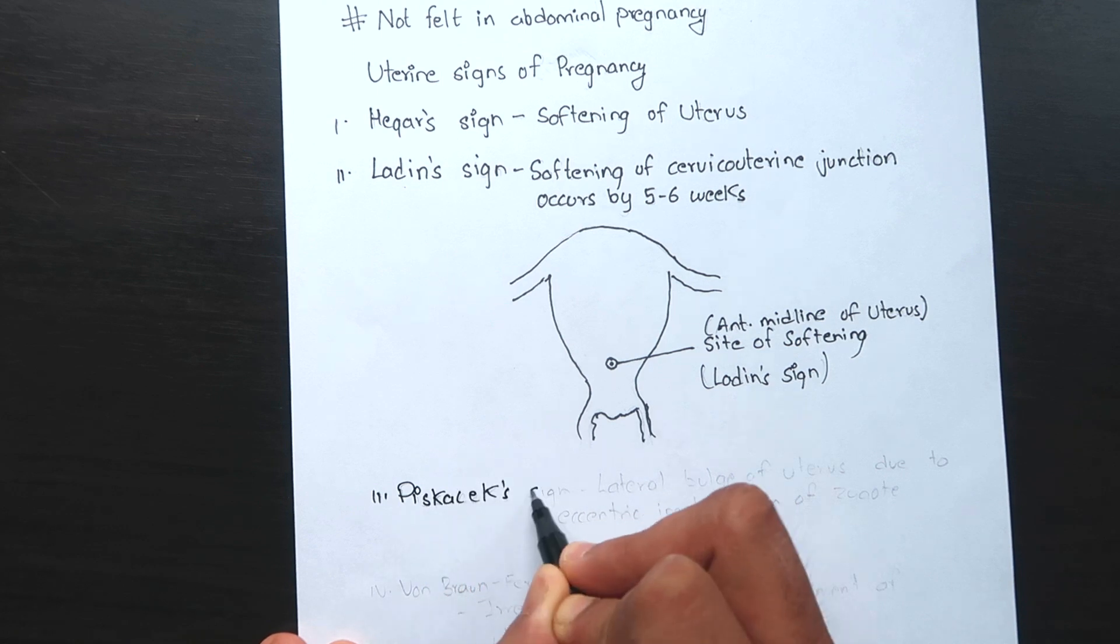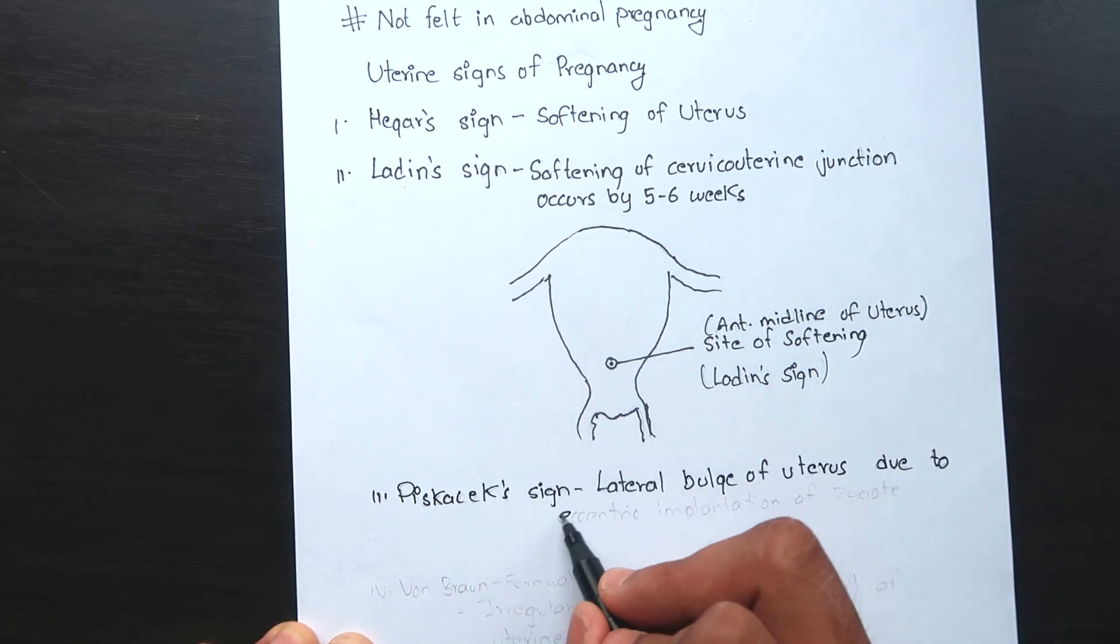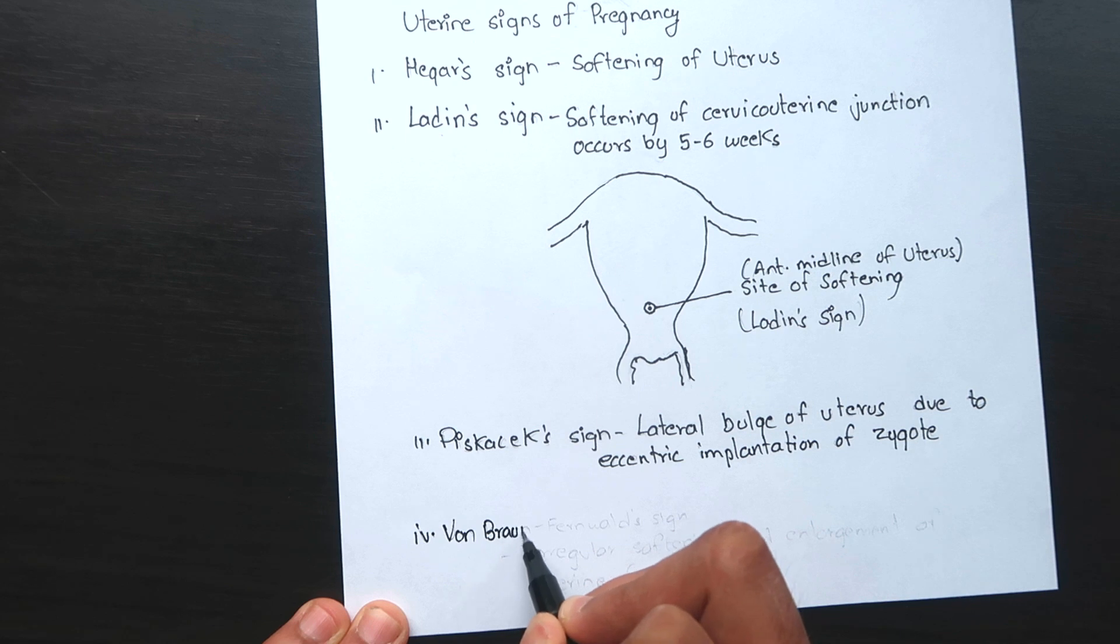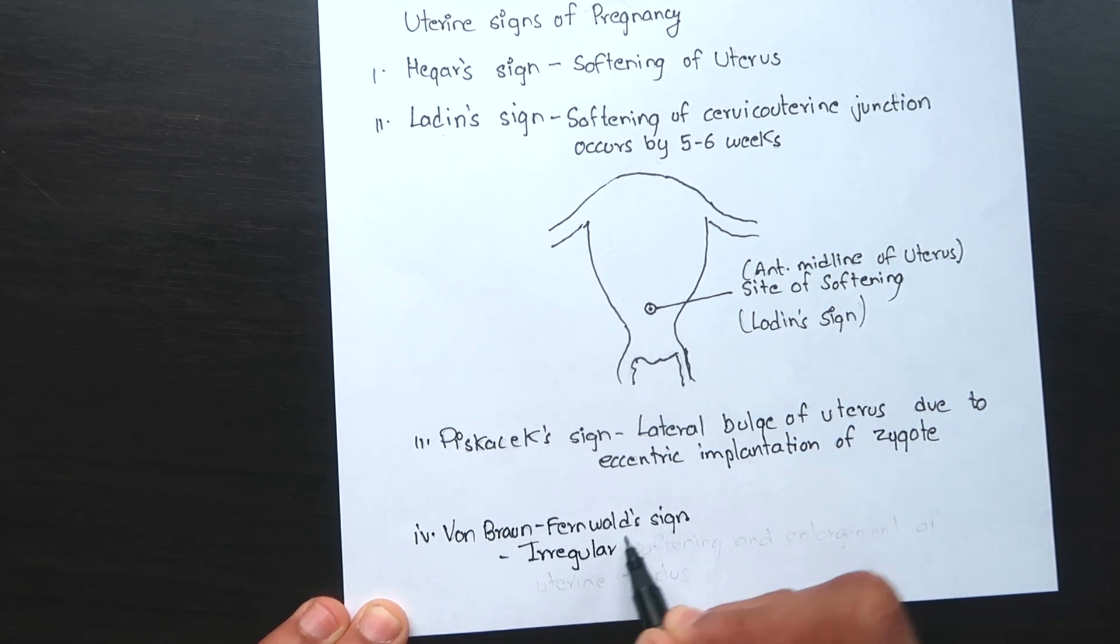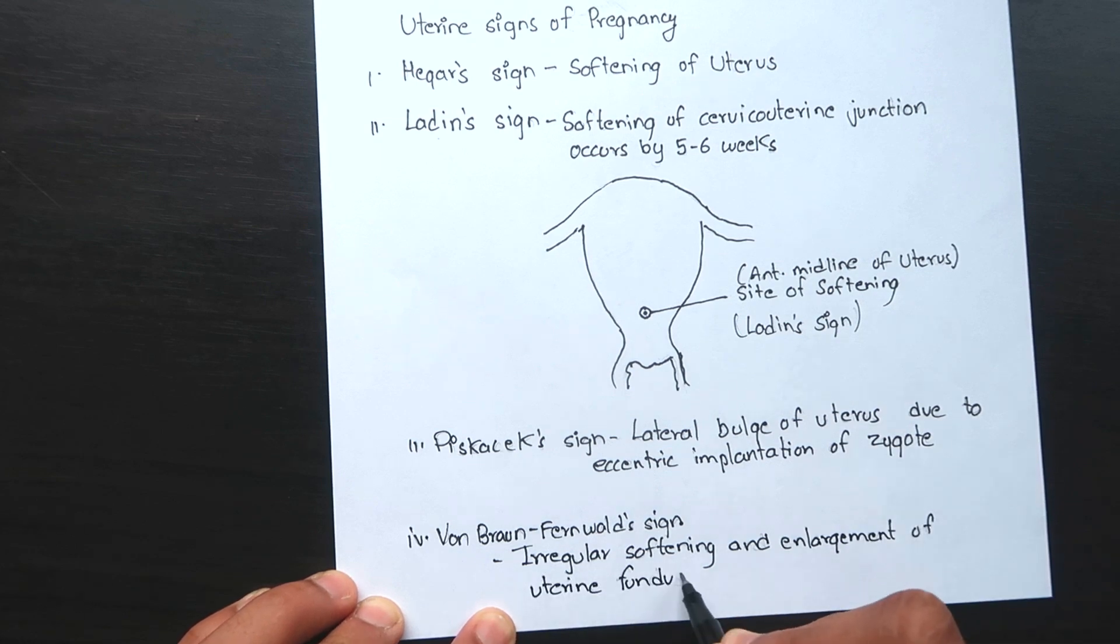Piskacek sign. It is palpable lateral bulge of the uterus due to eccentric implantation of the zygote in the uterus. Von Braun-Fernwald sign is irregular softening and enlargement of the uterine fundus during early pregnancy.